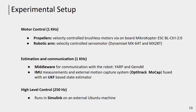For the experiment setup, the low-level motor control loop runs at 1 kHz. The propeller velocities are controlled via an onboard microcopter controller, and the robot arm is controlled in velocity via Dynamixel motors. The robot position and orientation are estimated at 1 kHz using a UKF estimator, which fuses information from the onboard IMU and an external motion capture system. The high-level controller is implemented in Simulink and runs on an external machine at a frequency of 250 Hz.